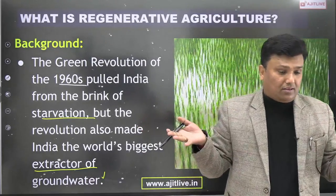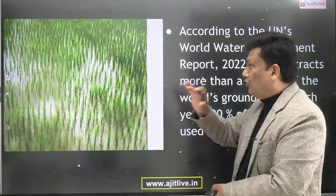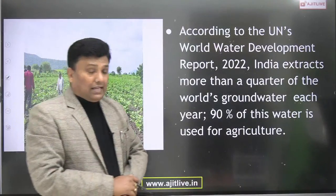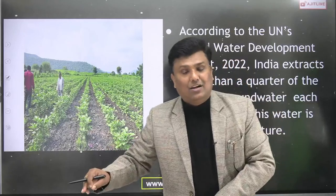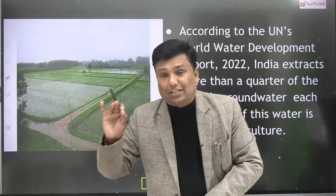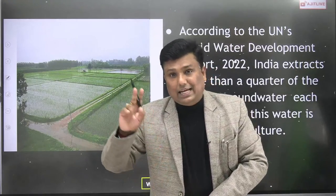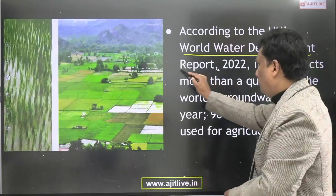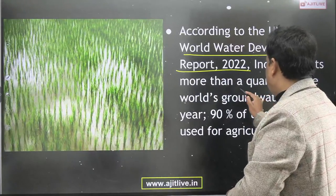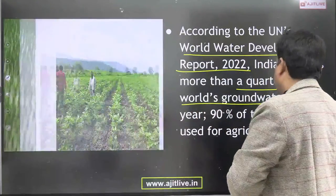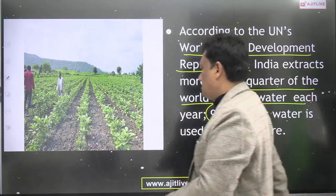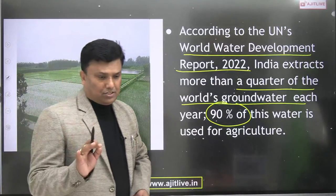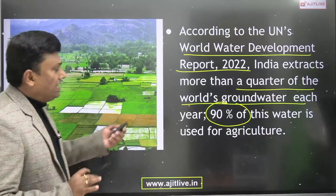According to the UN's World Water Development Report 2022, India extracts more than a quarter of the world's groundwater, and 90% of this is used for agriculture. Currently there is severe and widespread deficiency of organic carbon in Indian soils. When you mention the name of the report in your answer, it makes your answer more effective.